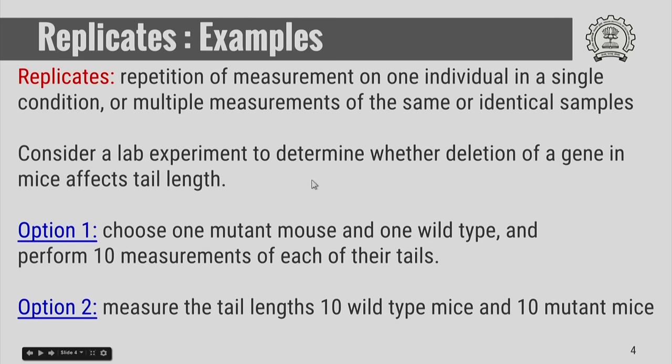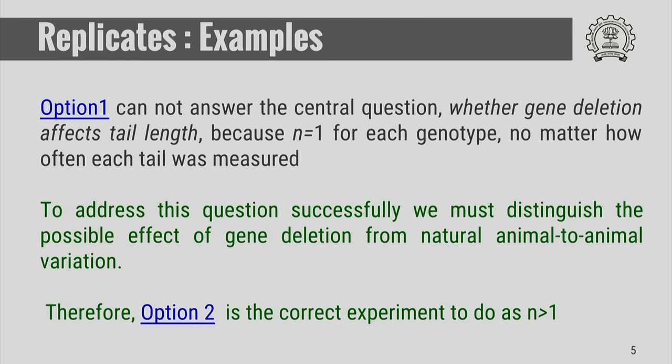Let us consider a lab experiment to determine whether deletion of a gene in mice affects its tail length. There are two options to do this experiment. In option one, one chooses one mutant mouse and one wild-type mouse and performs 10 measurements of each of their tails. In option two, one measures the tail length of 10 wild-type mice and 10 mutant mice. The question is which one of these two is the correct way of doing this experiment. Option one cannot answer the central question of whether deletion of the gene affects tail length, because there is only one wild-type mouse and one mutant mouse.